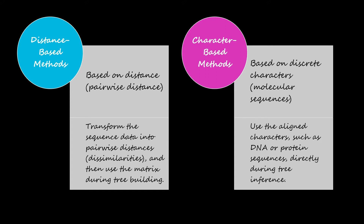In character-based methods we are not converting the sequences into distances — we are directly using the sequences for building the tree. So there is no loss of sequence information. However, there can be limitations, and we will see what those limitations are by the end of this video.